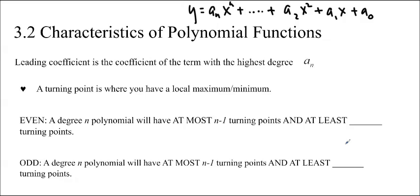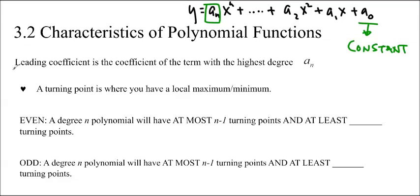Hello and welcome to Ms. Ma's Advanced Functions class. This is 3.2, the characteristics of polynomial functions. A polynomial function will be of this form: y equals a sub n x to the n, plus so on and so forth, until we get to a sub zero, or a naught. That is the constant. The coefficient in front of the largest x power is called the leading coefficient — it's a really important number. It's called a sub n because it's in front of x to the n.